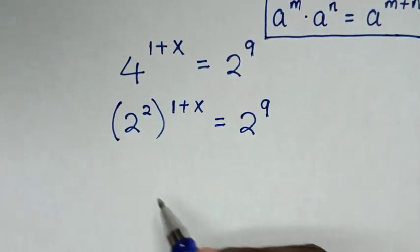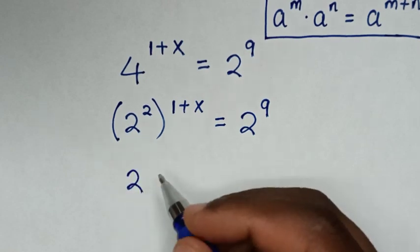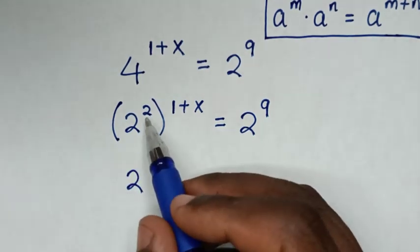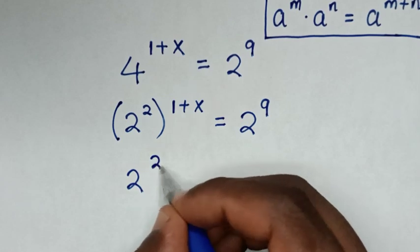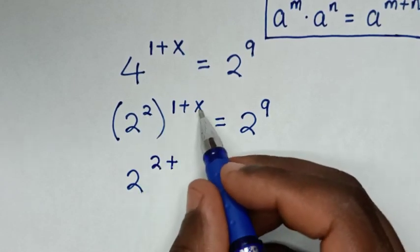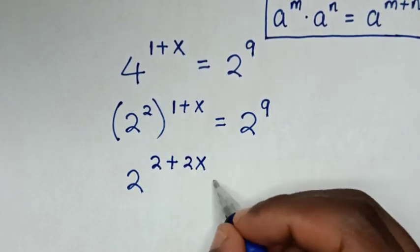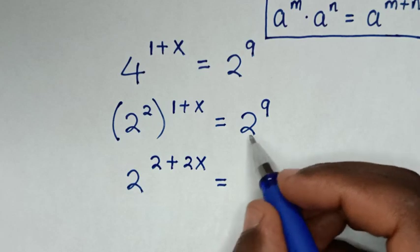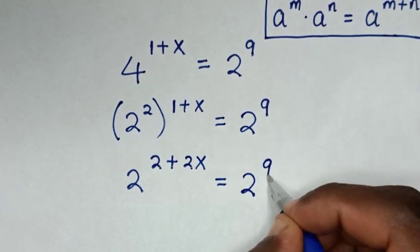In the next step we multiply the powers: 2 times 1 is 2, then plus 2 times x is 2x, giving us 2 power of 2 plus 2x is equal to 2 power of 9.